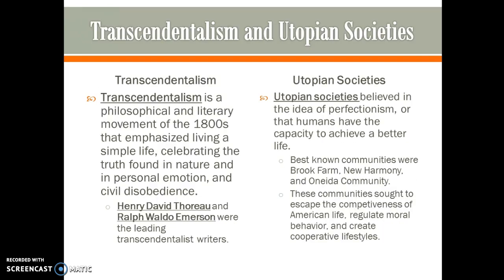Transcendentalism was a philosophical and literary movement of the 1800s that emphasized living simply, celebrating the truth found in nature and personal emotion, and civil disobedience. The most famous Transcendentalist writers were Henry David Thoreau and Ralph Waldo Emerson, both known for living off the grid and making a life outside of mainstream society. Utopian societies also developed during this period, aiming to create a perfect society. The best-known communities were Brook Farm, New Harmony, and Oneida. These communities sought to escape the competitiveness of American life, regulate moral behavior, and create cooperative lifestyles.